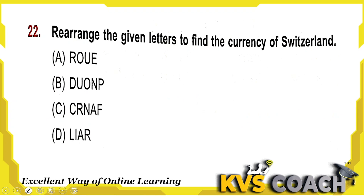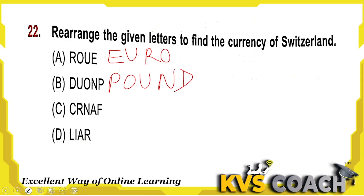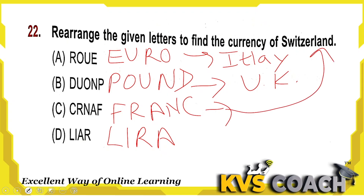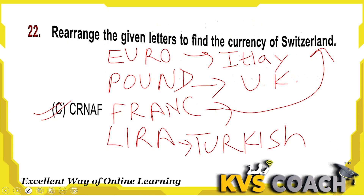Next: rearrange the given letters to find the currency of Switzerland. The options are Euro (E-U-R-O), Pound (P-O-U-N-D), Franc (F-R-A-N-C), and Lira (L-I-R-A). Euro is the currency of Italy. Pound is the currency of the UK. Franc is the currency of Switzerland — option C is the right answer. Lira is the currency of Turkey.